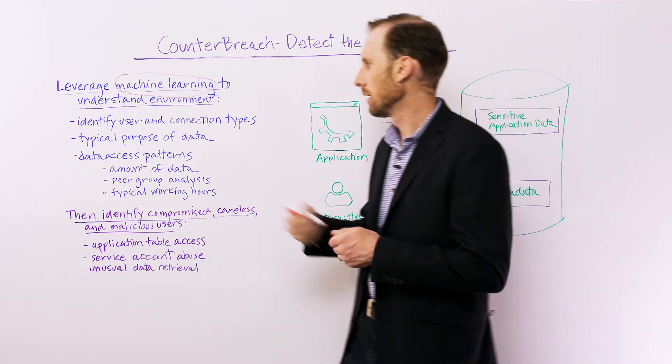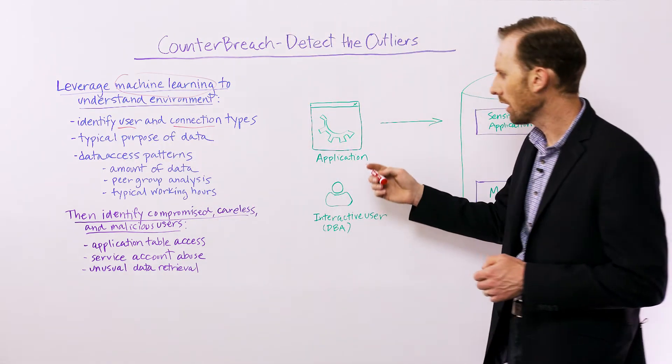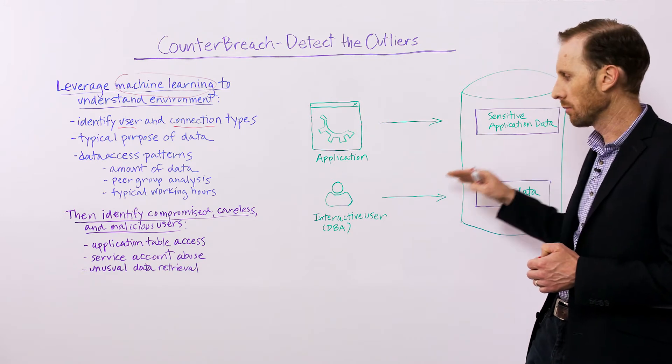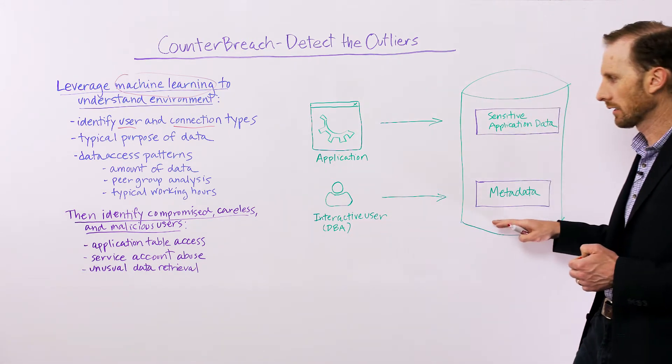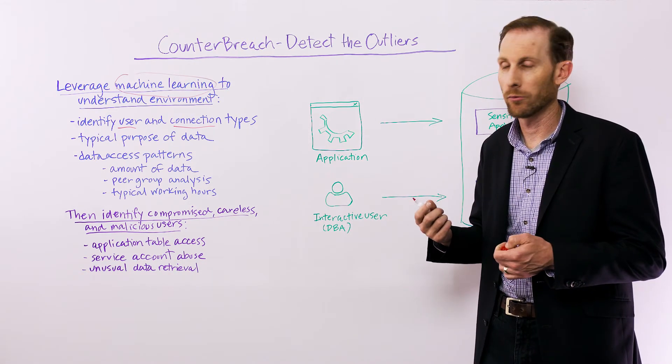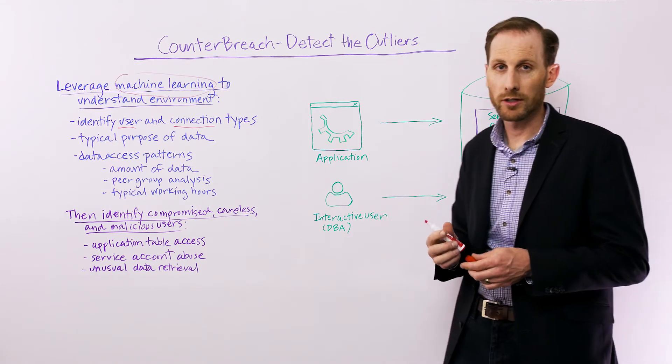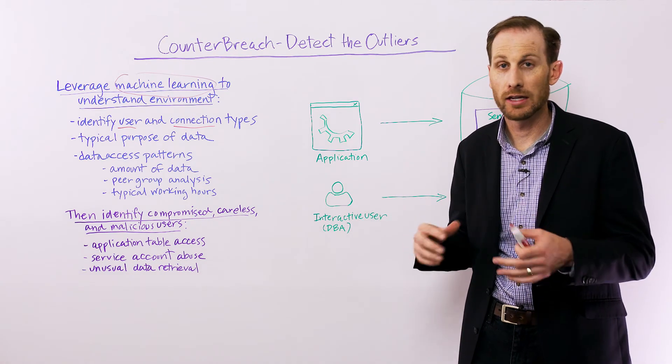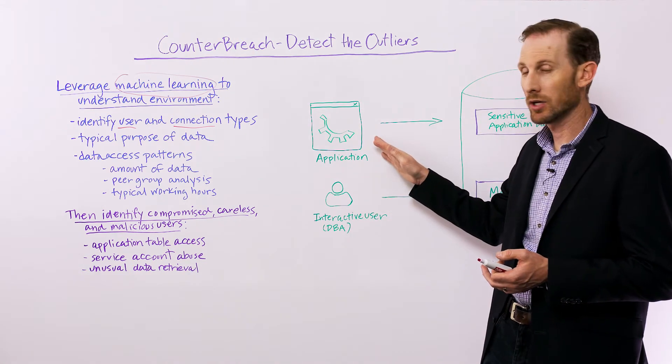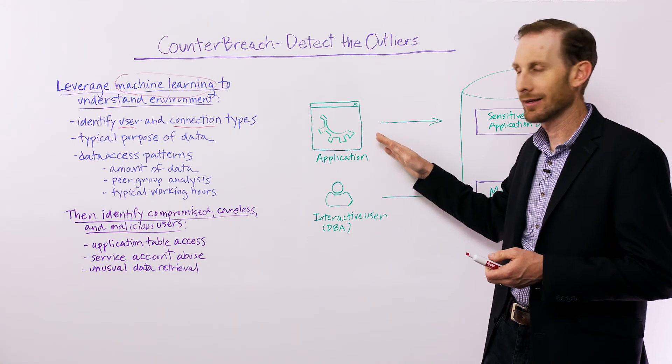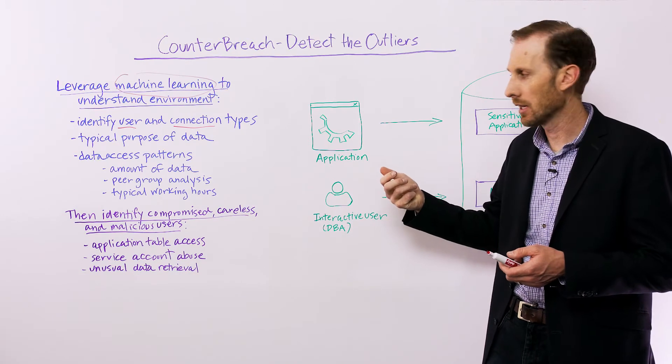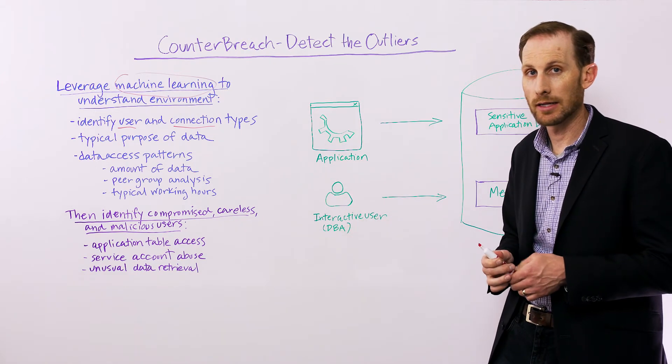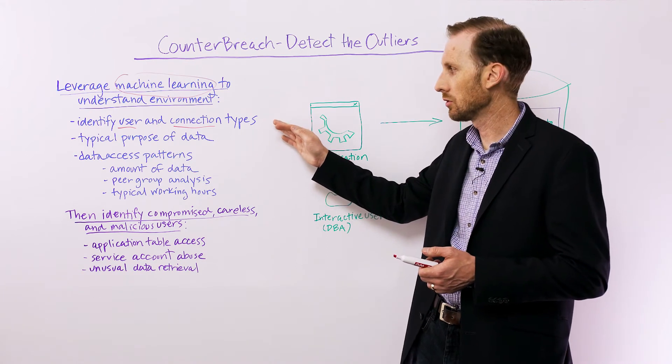So one of the first things we do is we actually identify user and connection types. So what does that mean? In the database world, one of the biggest challenges our customers have is just differentiating application service accounts connecting to the database versus interactive users or privileged users like DBAs connecting to the database because they perform and have different responsibilities. So if we understand the different users in some organizations, that's a huge win. I worked with a large payment processing company that literally had a rat's nest of legacy connections to the database. They didn't know who was what. And just by going in and automatically differentiating based on behavioral statistics and algorithms, this connection is an application based on velocity, based on what it does, how it connects to the database. We can automatically detect and say this is a service account. Based on the differentiation, we can also say this is a DBA that's connecting into the database.